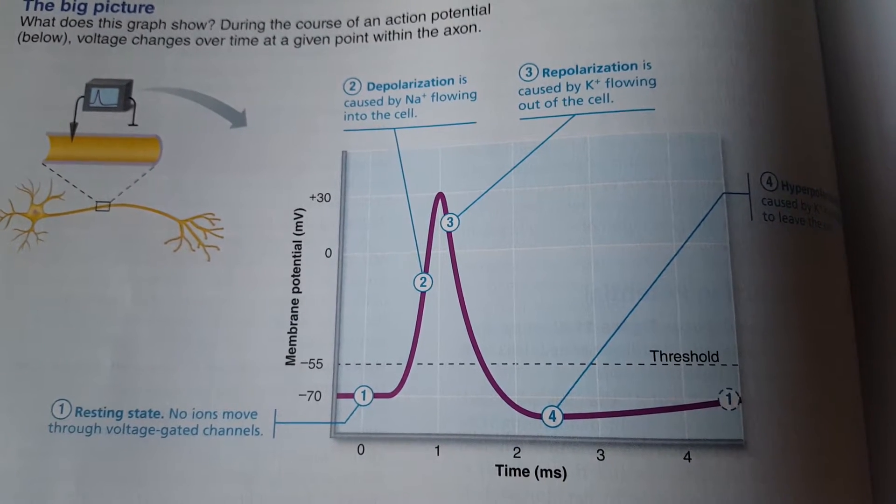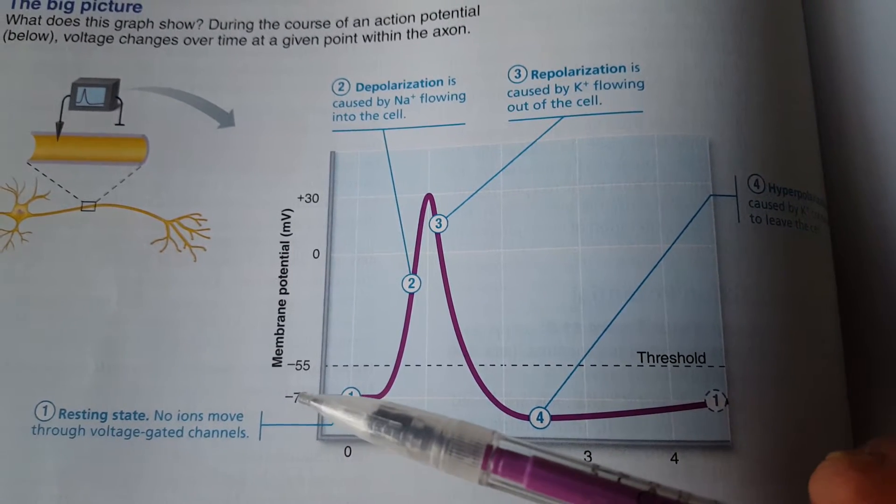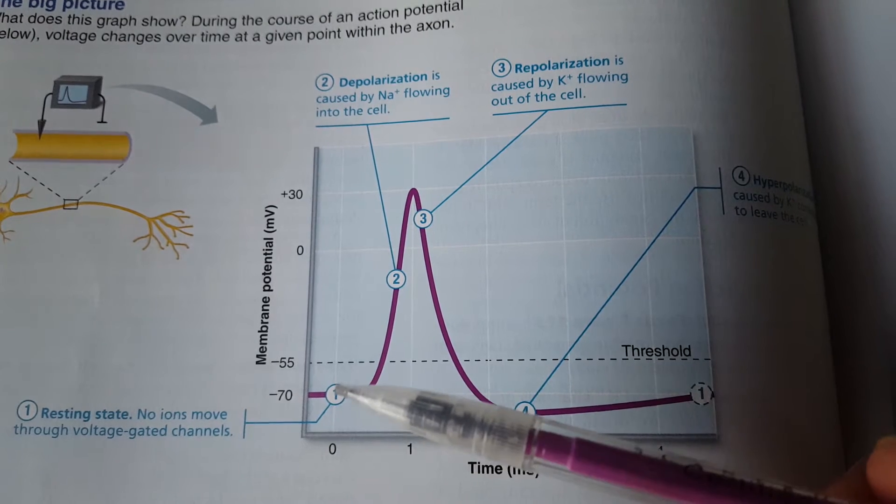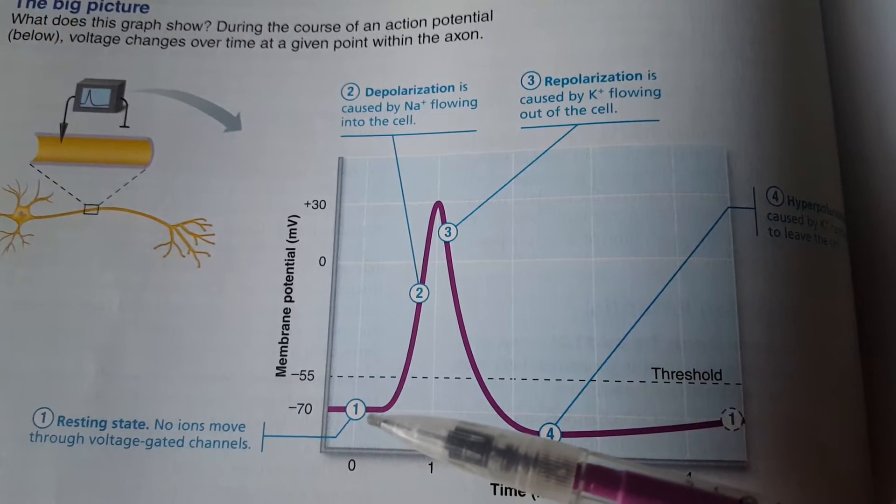Looking at the stimulus of a neuron, with most neurons our resting membrane potential is going to be negative 70 mV because we have more sodium on the outside of the membrane.